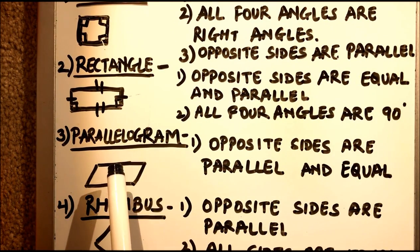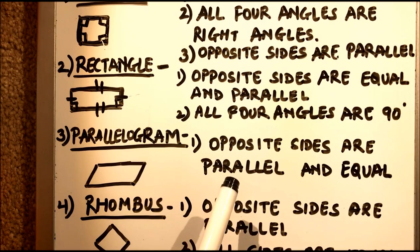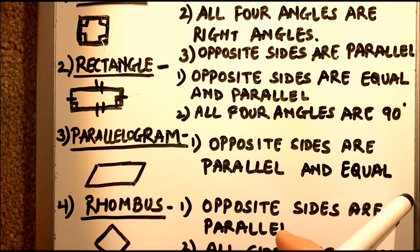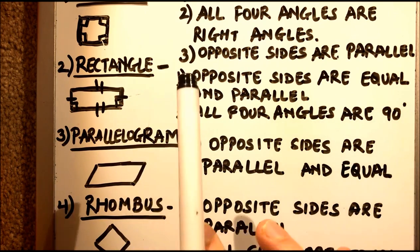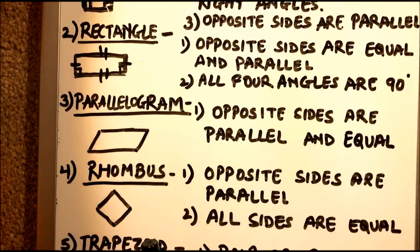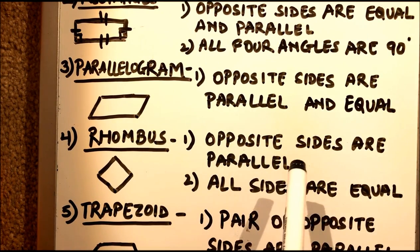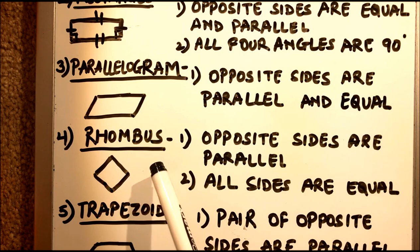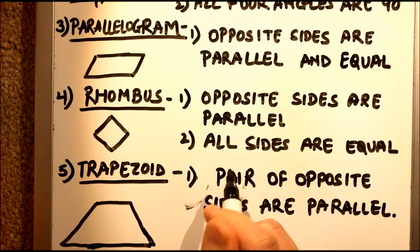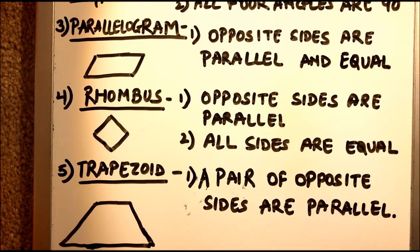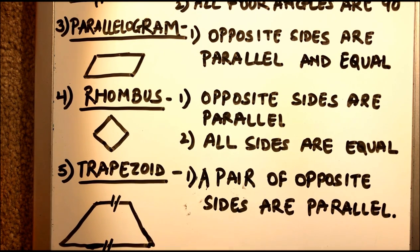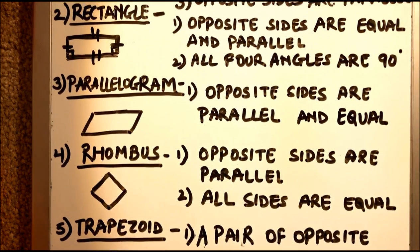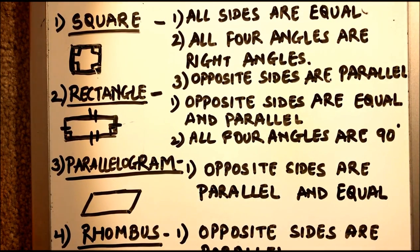In a parallelogram, opposite sides are parallel and equal, with no 90 degree angles. In a rhombus, opposite sides are parallel and all sides are equal. In a trapezoid, only one pair of opposite sides are parallel. So these are all the quadrilaterals. Thanks for watching.